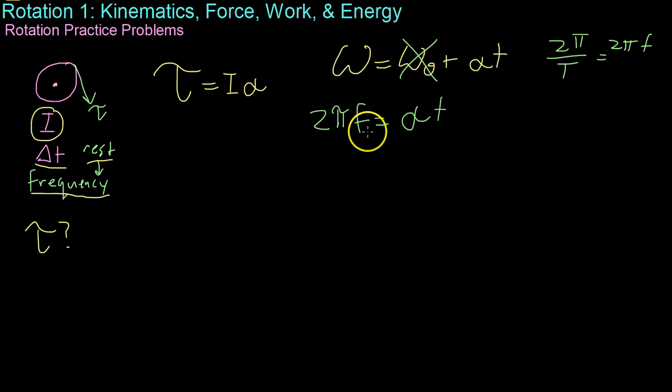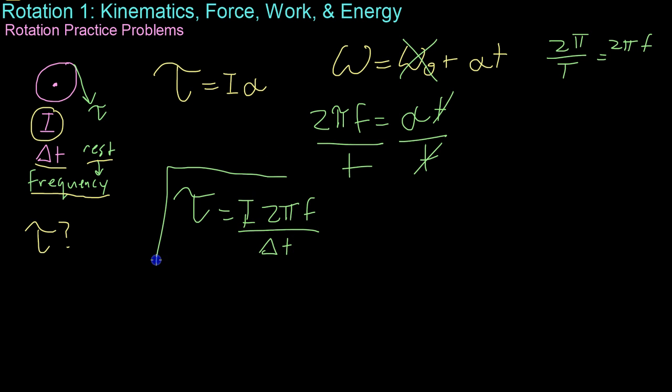Now, from here, we have all our known variables. All we have to do is move this t over and then substitute that in to our known equation for torque. To derive the expression torque equals I times alpha, which we can substitute this 2 pi f over delta t term. And that is the torque required to accelerate it to that frequency in the given time.